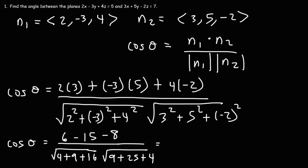6 minus 15. That is negative 9. Negative 9 minus 8 is negative 17. 4 plus 16 is 20 plus 9. So that gives us the square root of 29. And then 9 plus 25 is 34 plus 4. That's 38. Now let's multiply 29 and 38. So that's 1102.